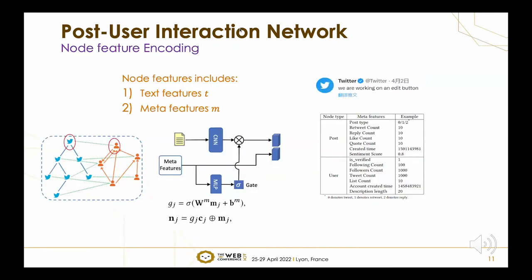The first module is the node feature encoder. A post on Twitter usually contains text features and meta features. The texts contain semantic and stance information, which is crucial for veracity detection. Meta features include things like retweet count or follower count, which imply the popularity and social attention of the post. We design a gated mechanism based on meta features to filter the text features extracted by a convolutional neural network, and the weighted text features are concatenated with meta features as the node embedding.